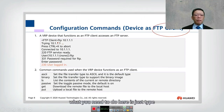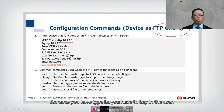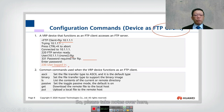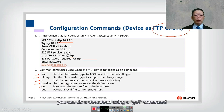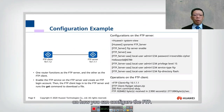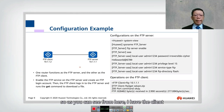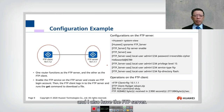For the FTP client, simply type 'ftp' followed by the IP address of the FTP server. Then enter the username and password to log in. Available commands include: ASCII or binary to set transfer mode, 'ls' for directory listing, 'passive' to toggle passive mode (which is the default), 'get' to download a file, and 'put' to upload a file.